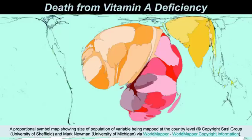Here we have our proportional symbol maps, this time showing deaths from vitamin A deficiency. Overwhelmingly you can see that's Africa and South Asia where people are dying from vitamin A deficiency. That is something endemic to that part of the world. The western hemisphere — South America, North America — as well as Western and Eastern Europe and much of Asia show little to nothing, but it's clearly endemic to Africa.